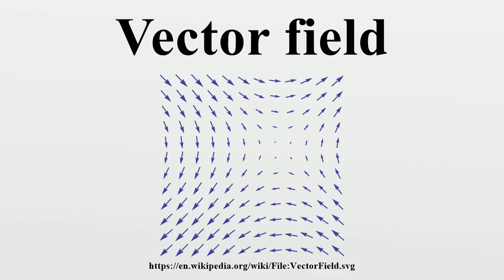The curves γₓ are called flow curves of the vector field V and partition S into equivalence classes. It is not always possible to extend the interval to the whole real number line. The flow may, for example, reach the edge of S in a finite time. In two or three dimensions, one can visualize the vector field as giving rise to a flow on S. If we drop a particle into this flow at a point P, it will move along the curve γₚ in the flow depending on the initial point P. If P is a stationary point of V, then the particle will remain at P. Typical applications are streamlines in fluid, geodesic flow, and one-parameter subgroups and the exponential map in Lie groups.